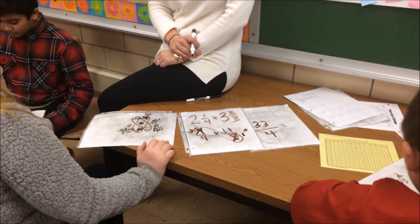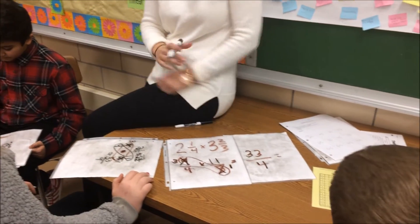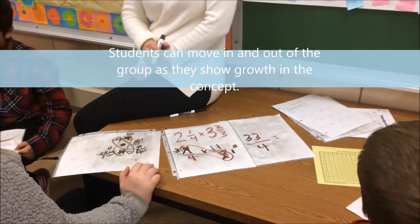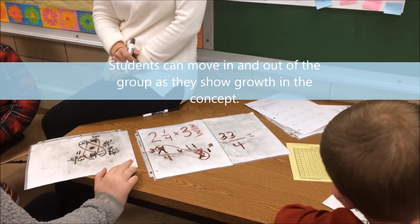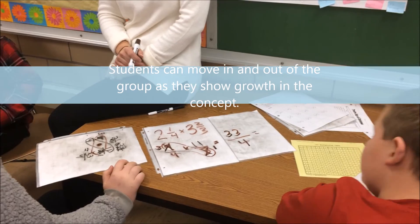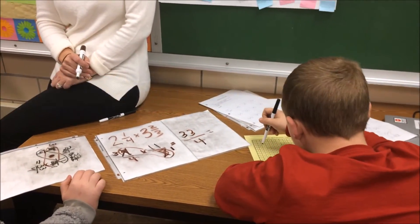How are we going to change that back to a mixed number? Dividing. We need to figure out how many times does four go into thirty-three? Eight with a remainder of one — so eight and one fourth. You got it. You are now released.